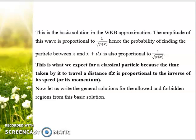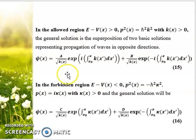Now let us write the general solution for the allowed and forbidden regions from this basic solution. The allowed region is where E is greater than V(x), so momentum will be positive. We have this expression for wave function ψ(x) as a combination of two terms, where the first and second terms are respectively for the right-side going wave and the left-side going wave.